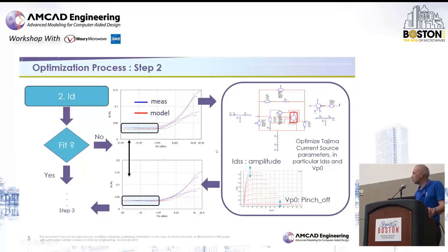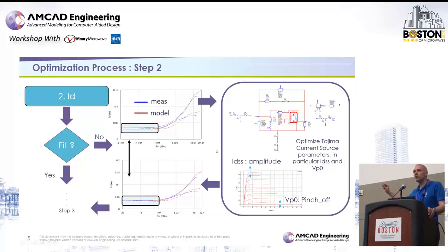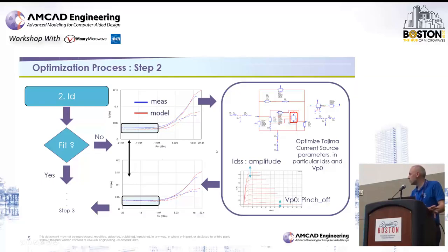Once we have done that, we also need to pay attention to the load pull simulation versus measurement comparison, especially looking at the very first point of the IV characteristic. If we observe current consumption over output power, we can sometimes see a small shift between the model response and the load pull measurement. The next step is to refine the current source description to align the very first point of the current source over the P-out curve. This requires playing with different current source parameters such as the pinch-off parameter and the IDSS parameters.